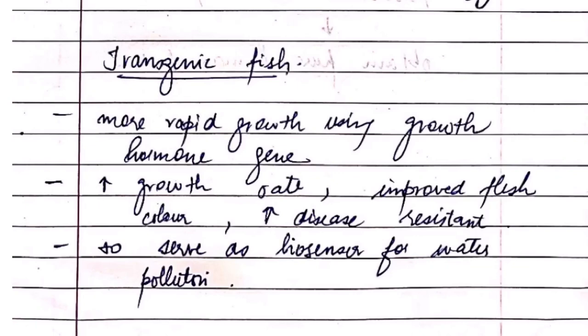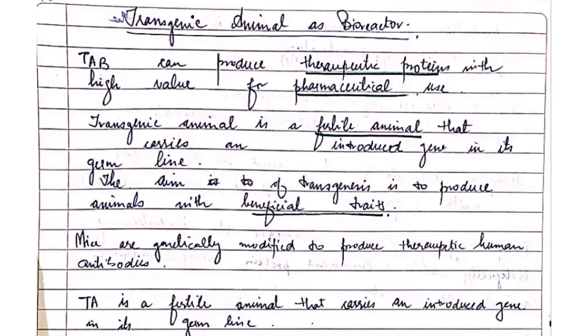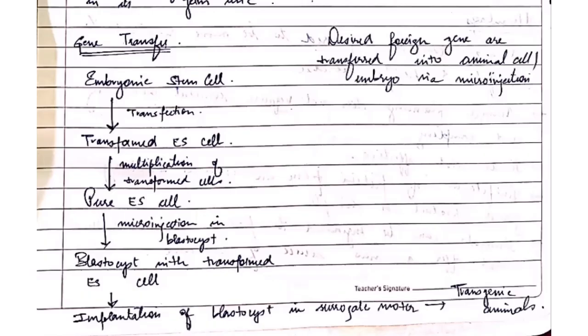Now we will study about transgenic animals as bioreactors — that means they can produce therapeutic proteins of high value for pharmaceutical use. A transgenic animal is basically a fertile animal that carries the introduced gene, which helps in providing useful pharmaceutical therapeutic proteins. For example, mice are genetically modified to help in producing antibodies. The process for gene transfer starts with embryonic stem cells that are transfected into embryo cells.